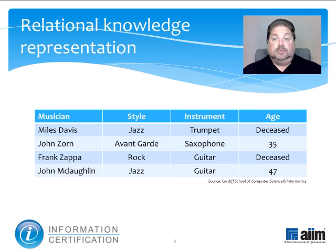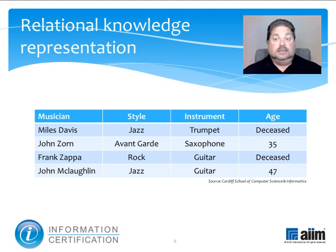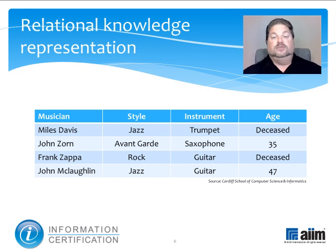Relational knowledge representation is essentially nothing but a fancy phrase that means presenting comparisons. From an information management perspective, database tables often do the trick by systematically setting out in columns each fact about a set of objects. A simple example is shown here, and paves the way for people or knowledge systems to answer such questions as: who's still alive, who plays jazz, who plays the trumpet, and so forth.